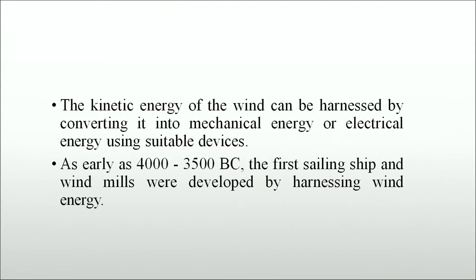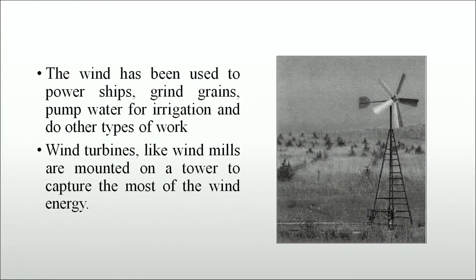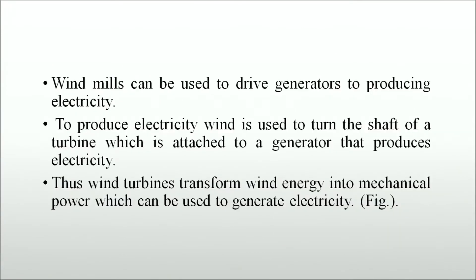As early as 4000 to 3500 BC, the first sailing ships and windmills were developed by harnessing wind energy. Wind has been used to power ships, grind grains, pump water for irrigation and do other types of work. Wind turbines like windmills are mounted on a tower to capture the most wind energy. Windmills can be used to drive generators to produce electricity — wind turns the shaft of a turbine attached to a generator that produces electricity.